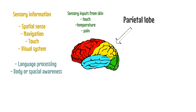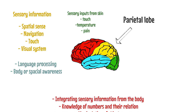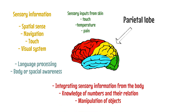The superior and inferior parietal lobule are the primary areas of body or spatial awareness. The parietal lobe plays important roles in integrating sensory information from various parts of the body, knowledge of numbers and their relations, and the manipulation of objects.